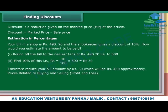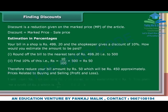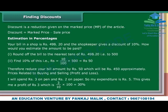Price related to buying and selling, profit and loss. I will spend Rs. 3 on a pen and Rs. 2 on paper, so my expenditure is Rs. 5. This gives me a profit of Rs. 3, which is 3 upon 10 into 100, equal to 30%.